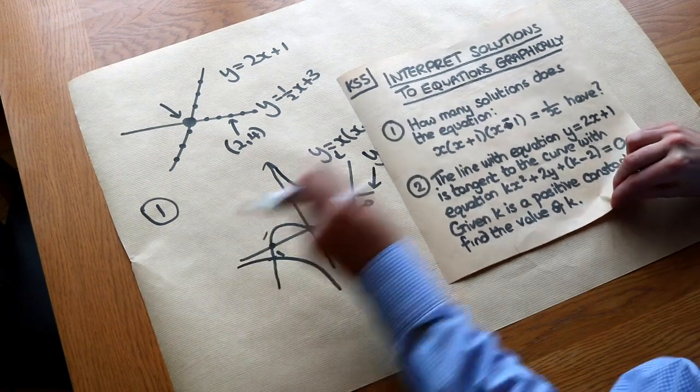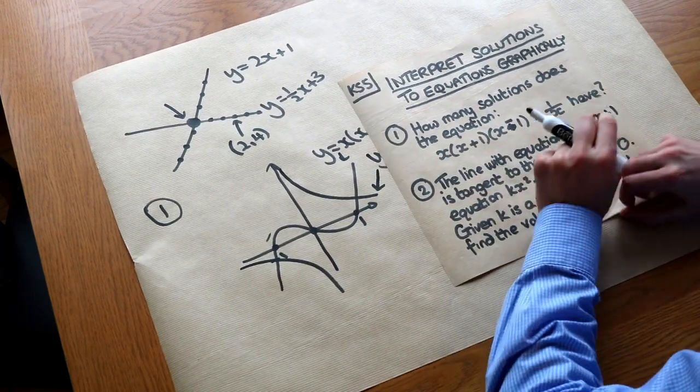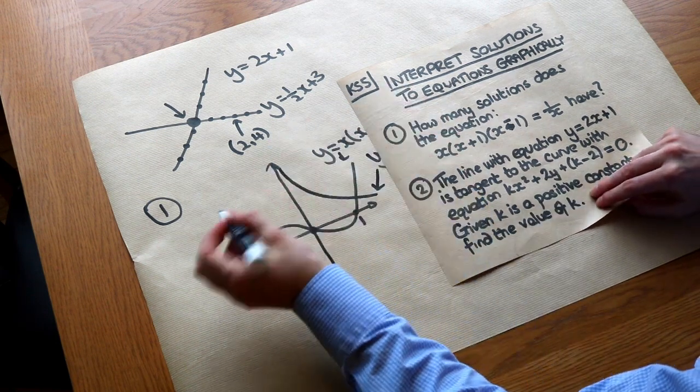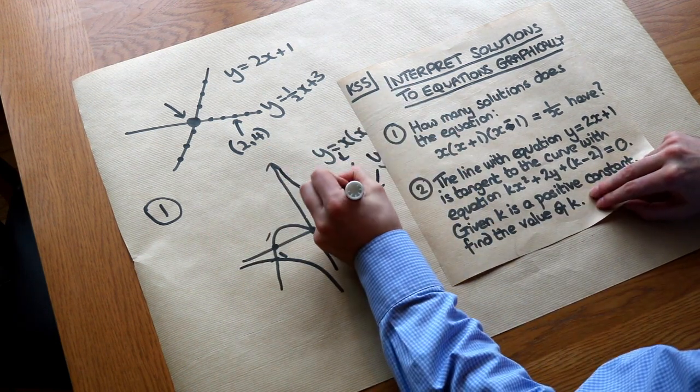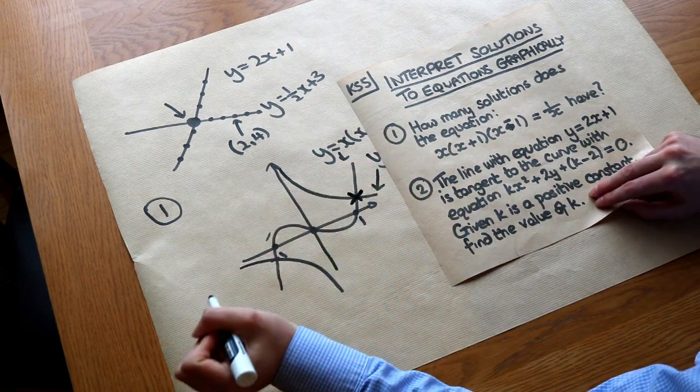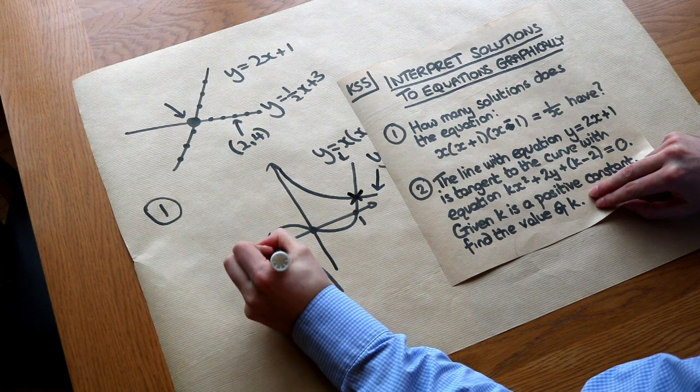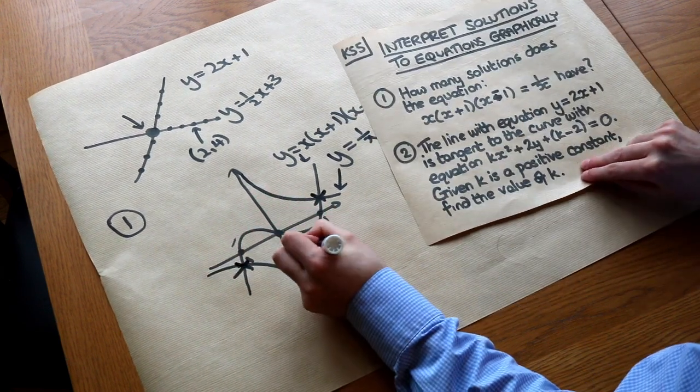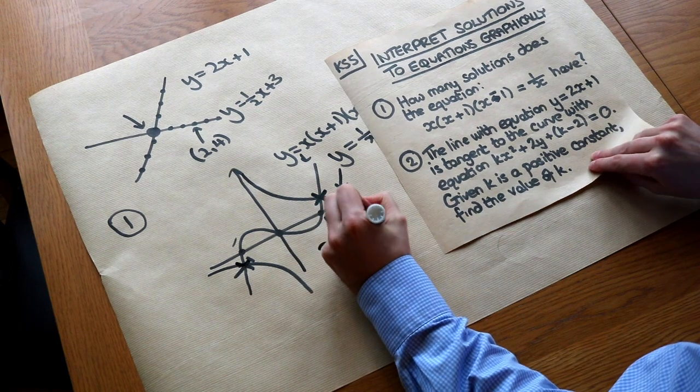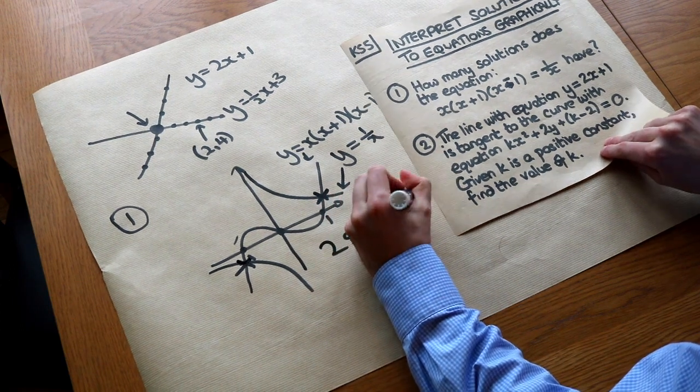And we don't actually need to work out the exact solutions to this equation. We just need to know how many solutions it has. And basically that's just how many points of intersection it has. So we can see there's one point of intersection there, and then there's one point of intersection here. So that means this equation must have two solutions because there's two points of intersection.